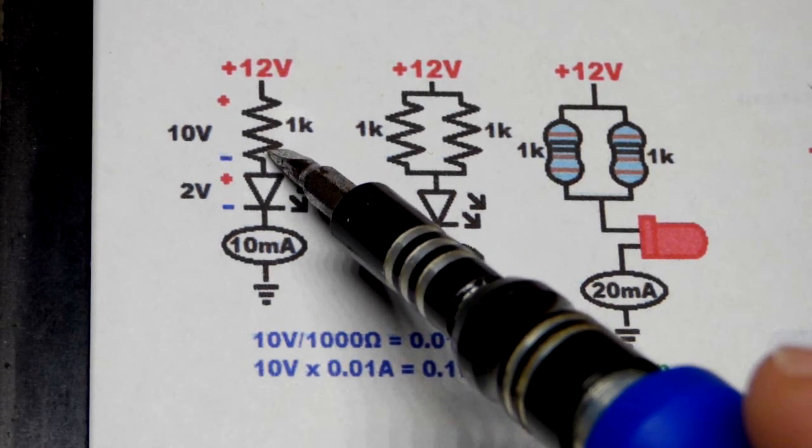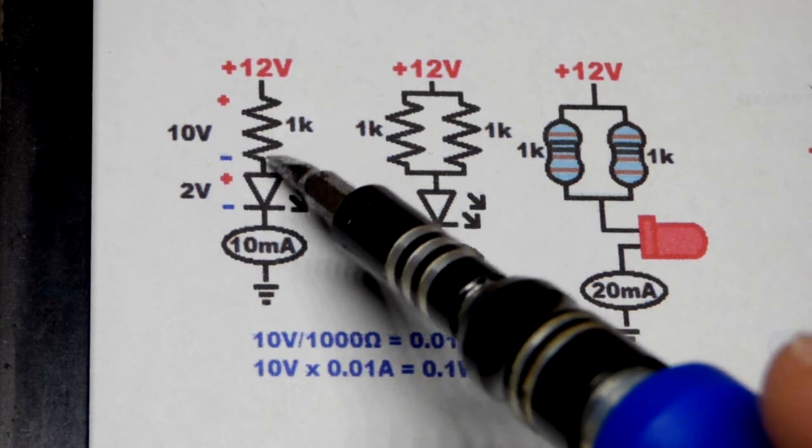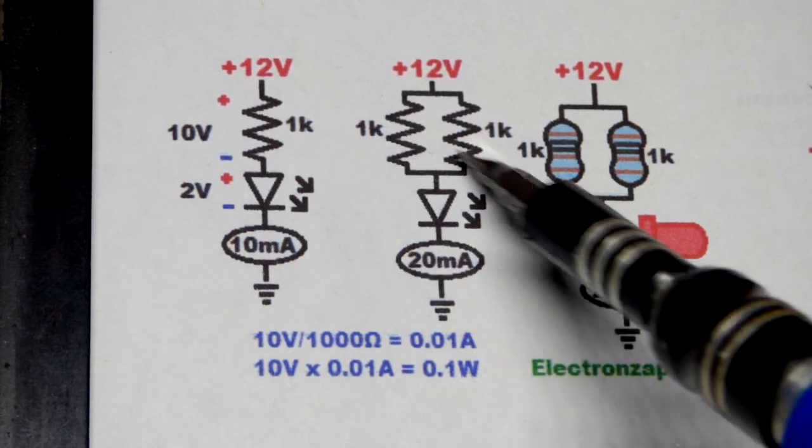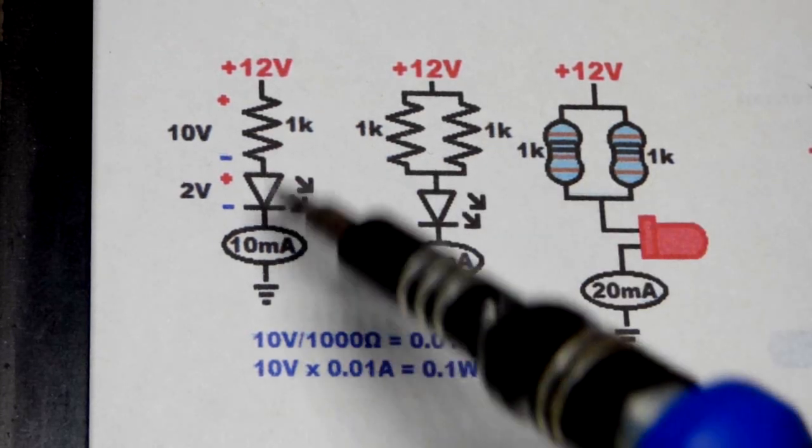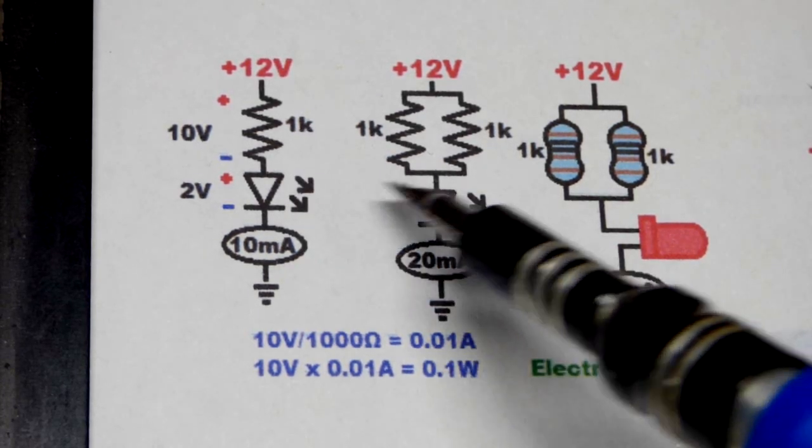So instead of getting a half watt 500 ohm resistor, you can just put a couple one kilo ohm resistors in parallel. That will double the current instead of using half the resistance.